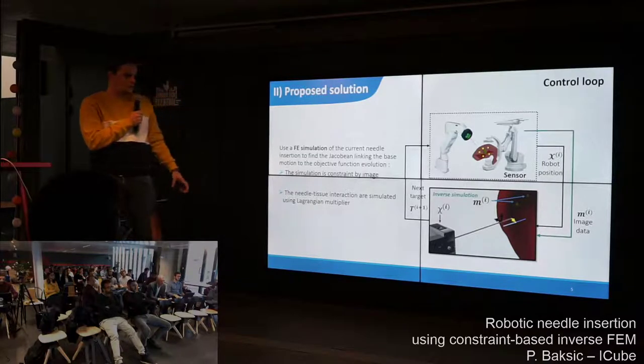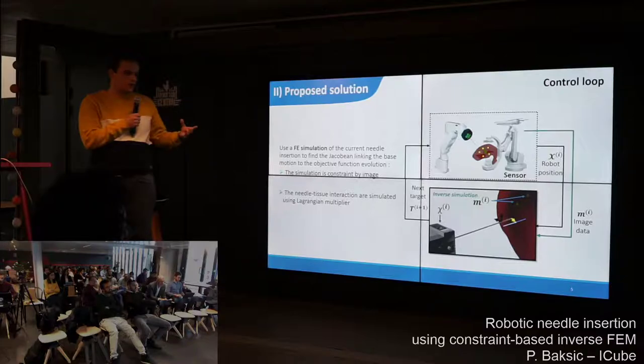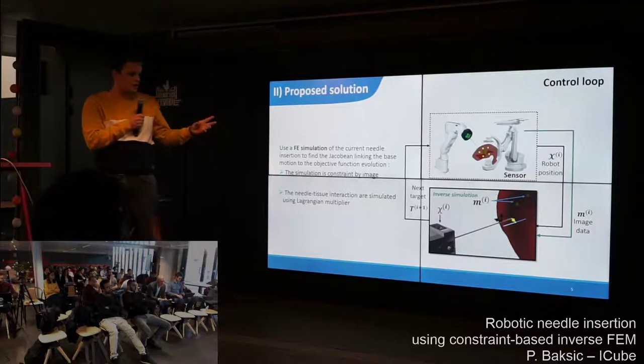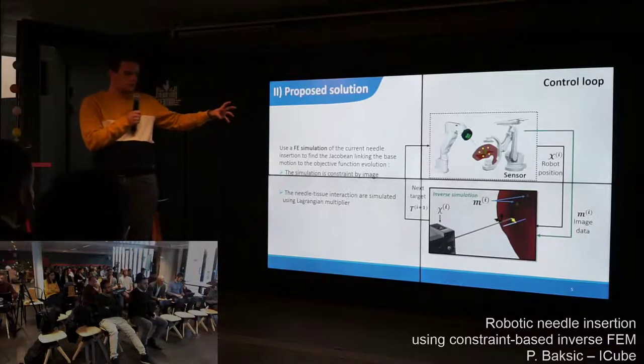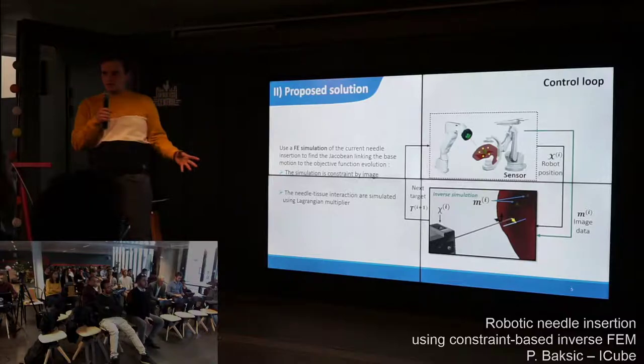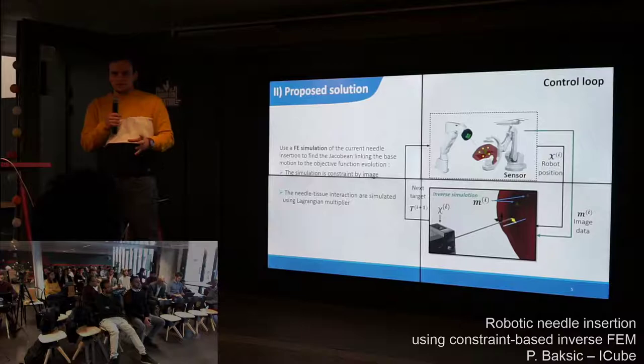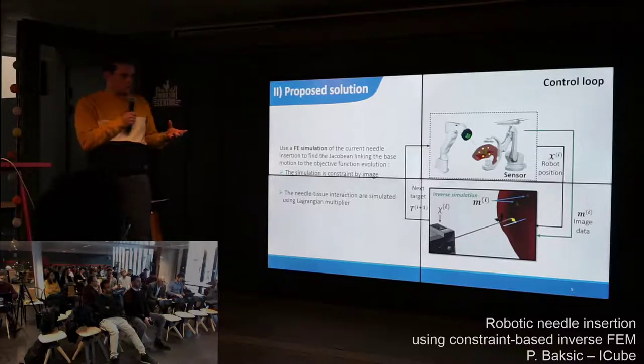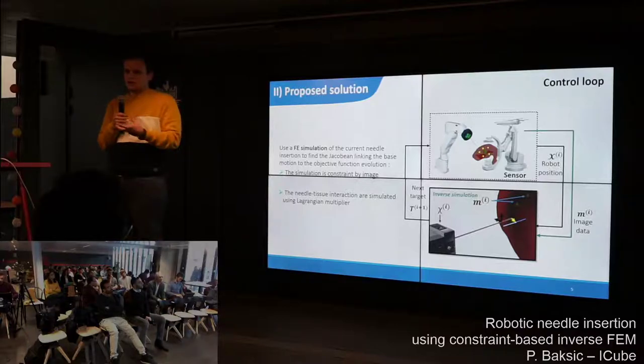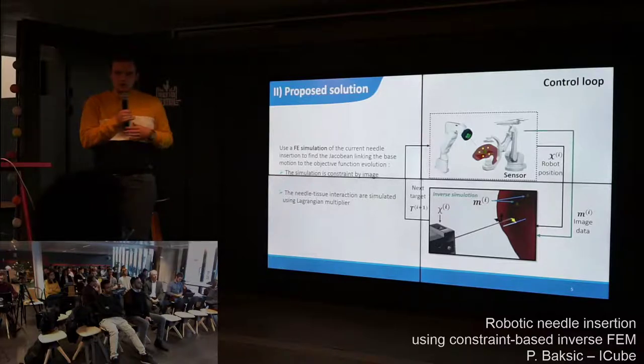This simulation needs to be as close as possible to the real operation, so it is constrained by image data. For instance, images can be used to track the robot and to track features inside the liver to take into account the motion and deformation. Because we want to predict the deformation, we need to simulate the interaction between the needle and the liver using Lagrangian multipliers.